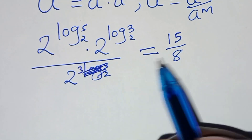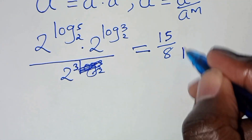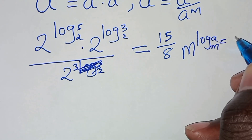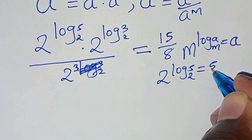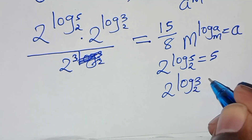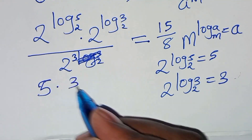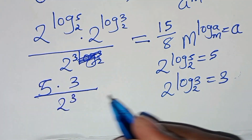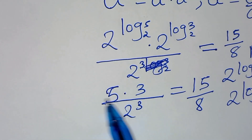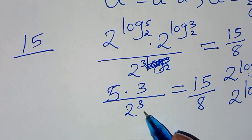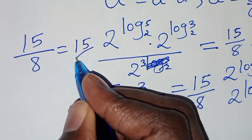Now, 2 to the power log 5 to base 2, and 2 to the power log 3 to base 2 — these are in the form m to the power log_m(a), which equals a. So 2 to the power log 5 to base 2 gives 5, and 2 to the power log 3 to base 2 gives 3. Substituting, we have 5 times 3 divided by 2 to the power 3, which is 15 divided by 8, since 2 to the power 3 is 8. This equals 15 over 8.